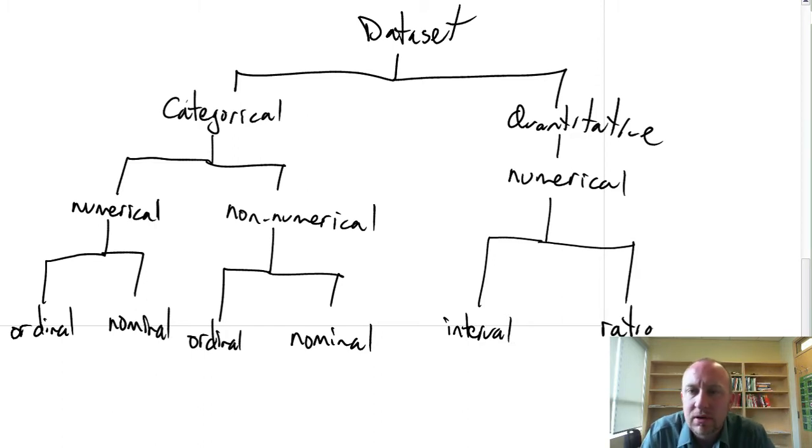This is either going to be an interval or a ratio. So if I know that something is ratio data, I know that it must be quantitative. If I know something is nominal, it must be categorical, and so on.